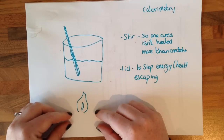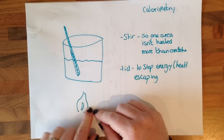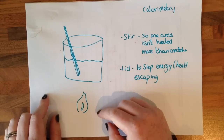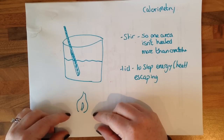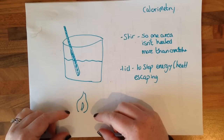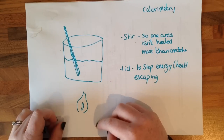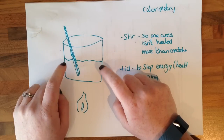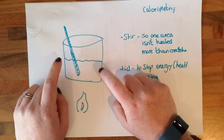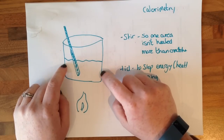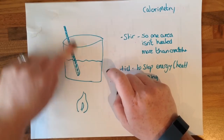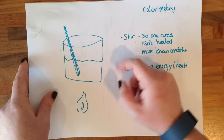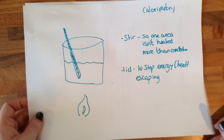You have an ethanol, methanol, propanol, or alcohol burner. You need to know the mass of that beforehand and the mass afterwards, and the difference. You have your water — you need to know the mass of water beforehand, the mass of water after, and if there's any difference. And you need to know the temperature beforehand, the temperature after, and if there's any difference.